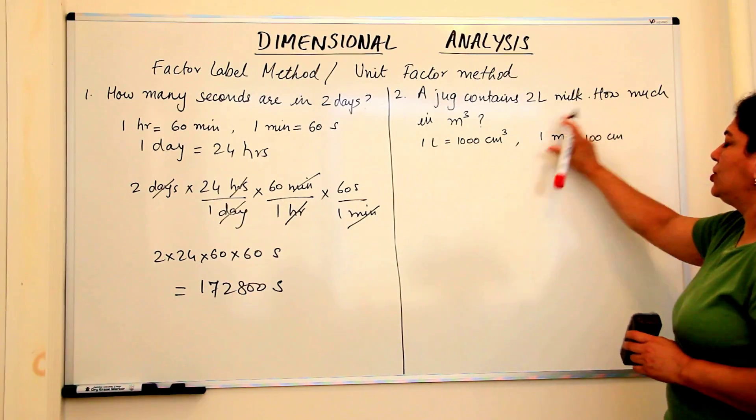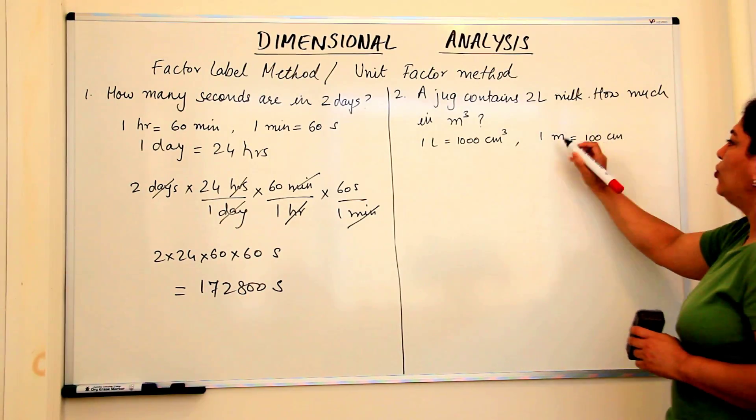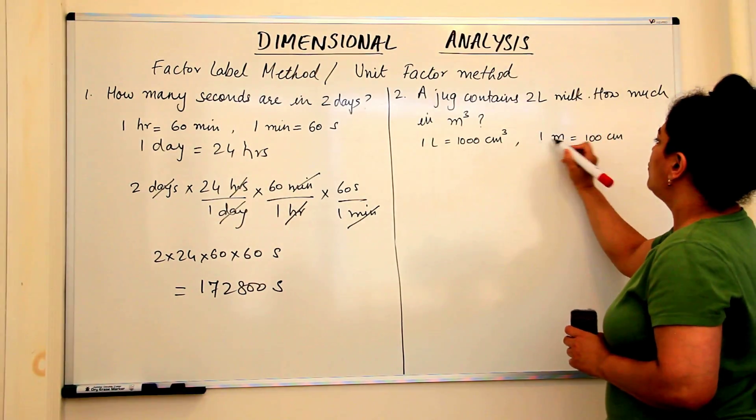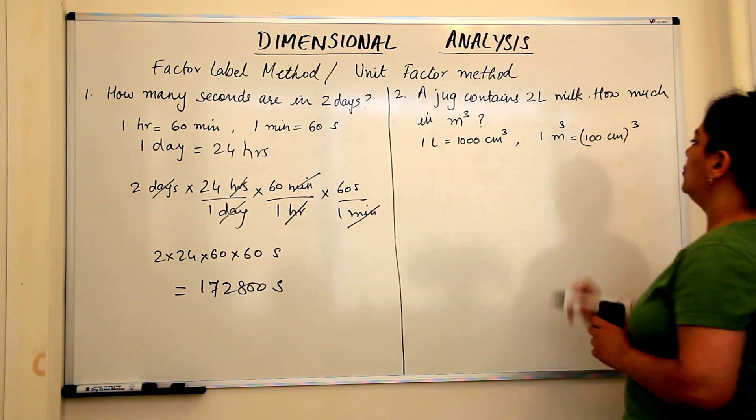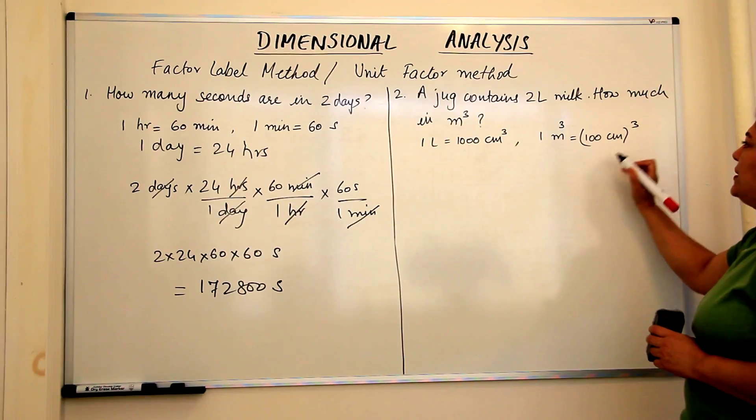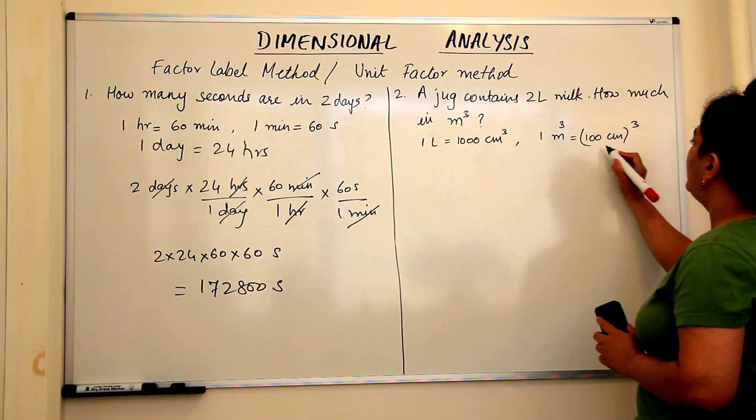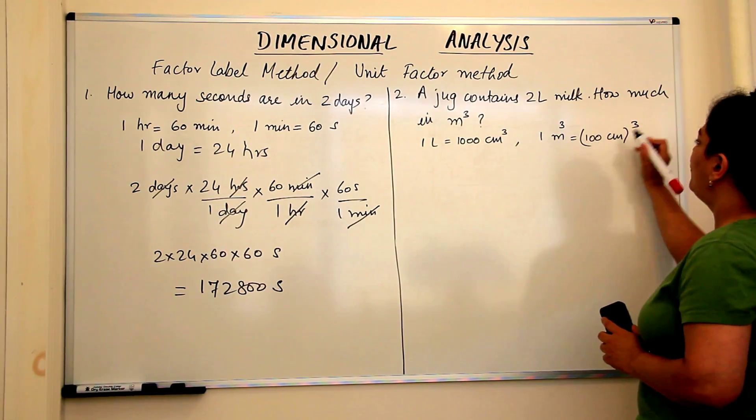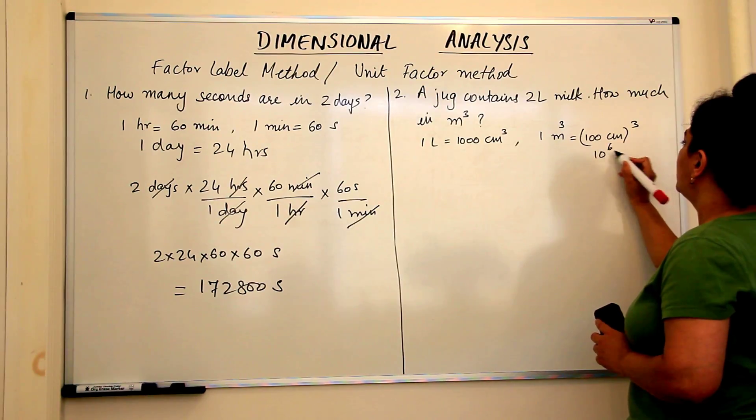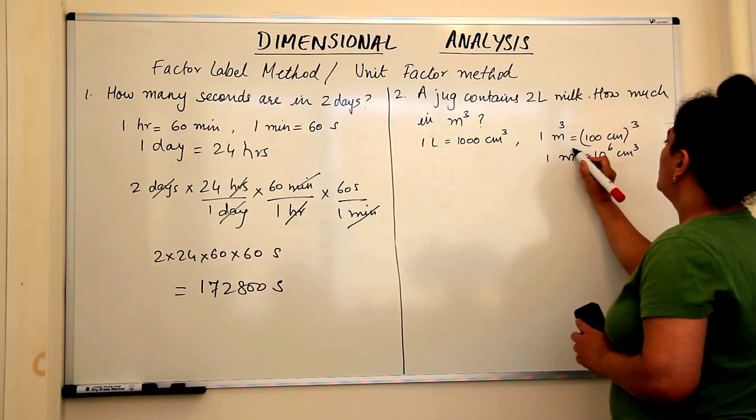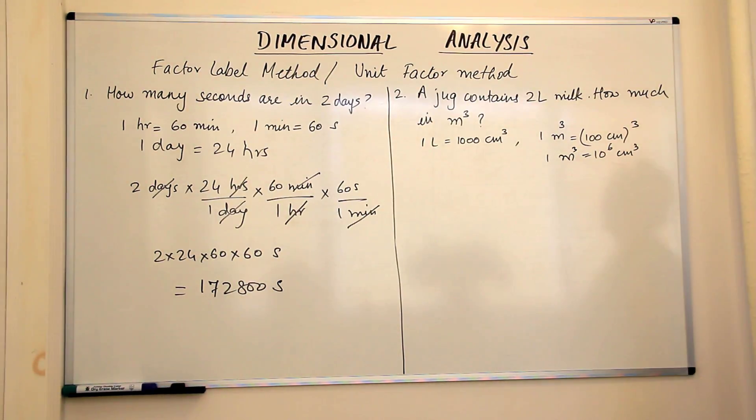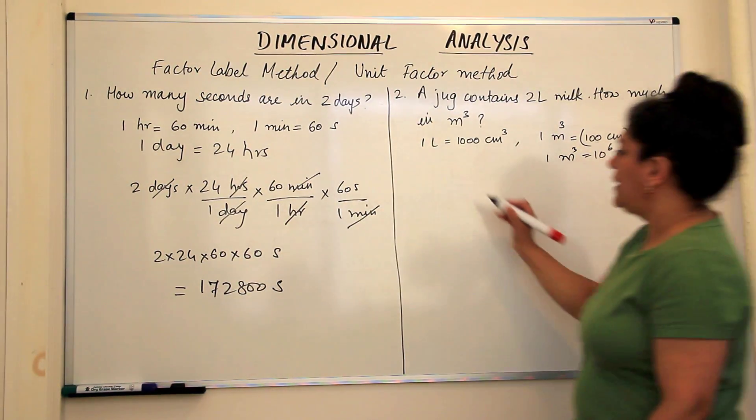We should multiply. If we just cube this whole conversion factor, we would get one metre cube into 100 centimetre cube. So 100 centimetre cube would be 10 to the power 6 centimetre cube would be equal to 1, the cube of 1 is 1. So 1 metre cube.